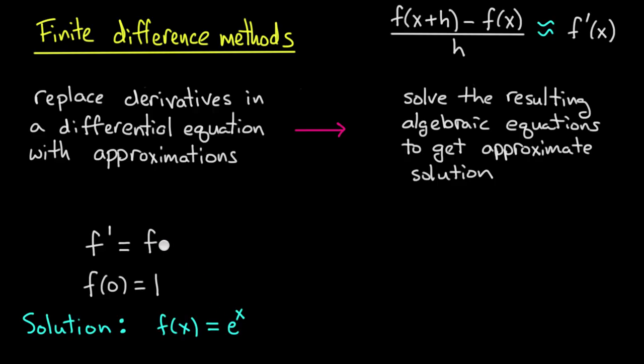The solution to this differential equation would be f(x) equals some constant times e to the x, and the initial condition would fix that constant at 1. So let's see if we can replace the derivative here, in this differential equation, with a difference quotient approximation and see what happens.